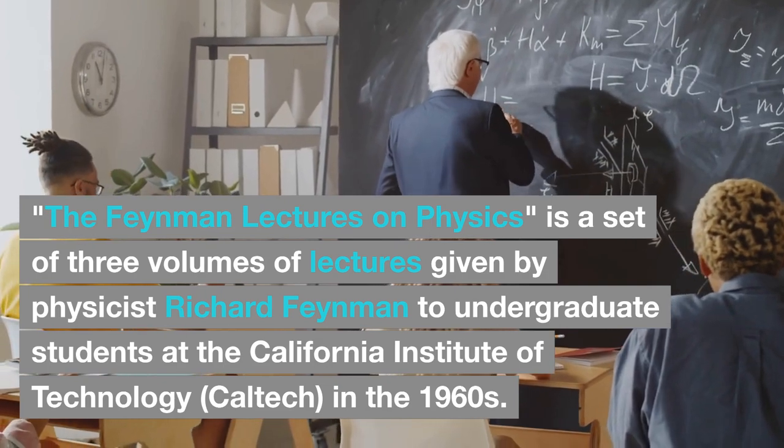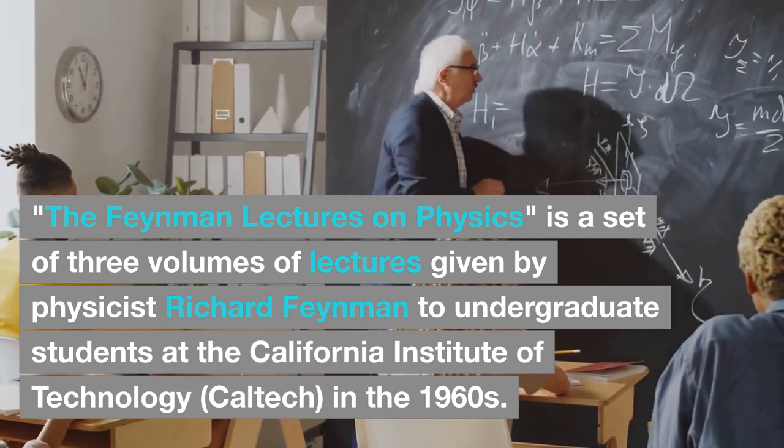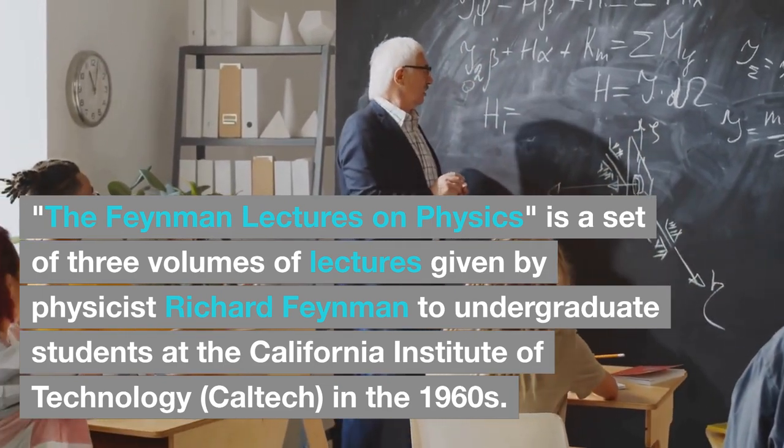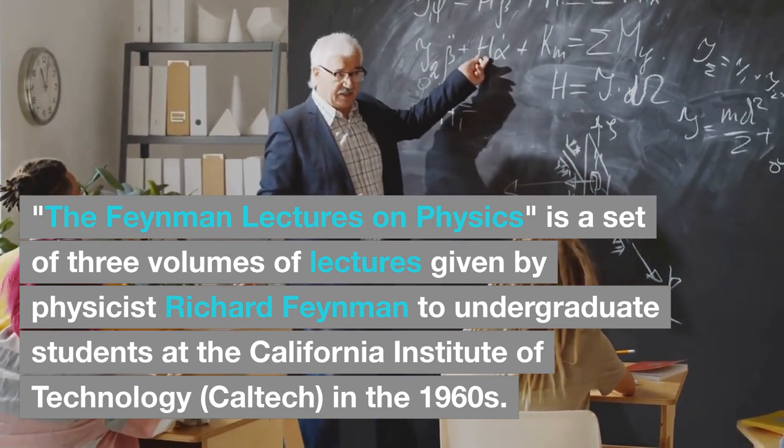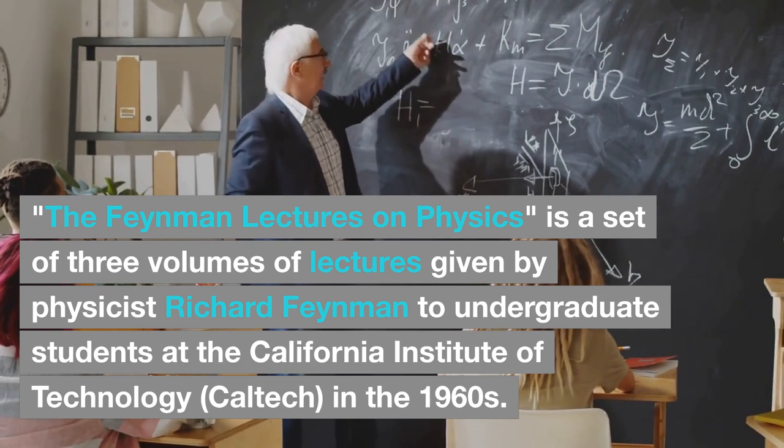The Feynman Lectures on Physics is a set of three volumes of lectures given by physicist Richard Feynman to undergraduate students at the California Institute of Technology, Caltech, in the 1960s.